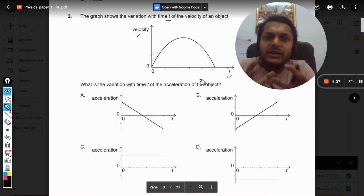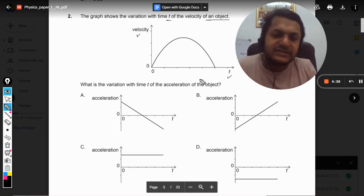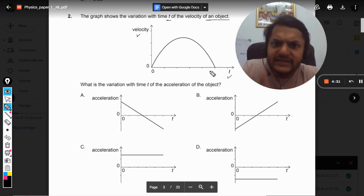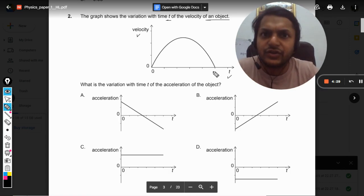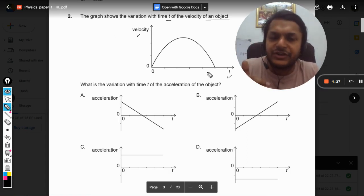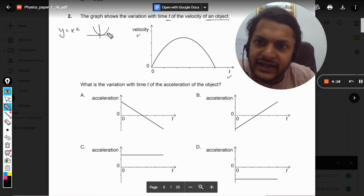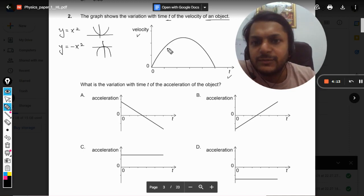Now we would be requiring a little bit of mathematics here. You see on the y-axis it is velocity, and as we can see this is a parabolic variation, which is negative parabolic variation. So from mathematics I am bringing that knowledge to you. Like for y = x², you have graphs like this, and if you have y = -x², you have graphs like this.